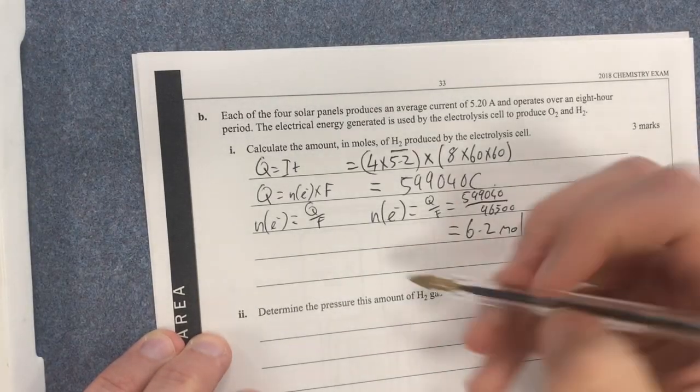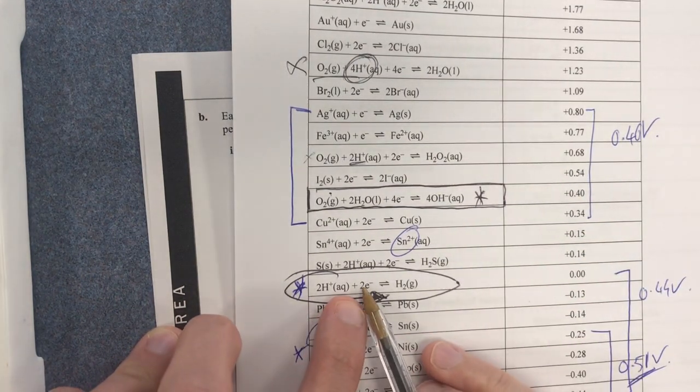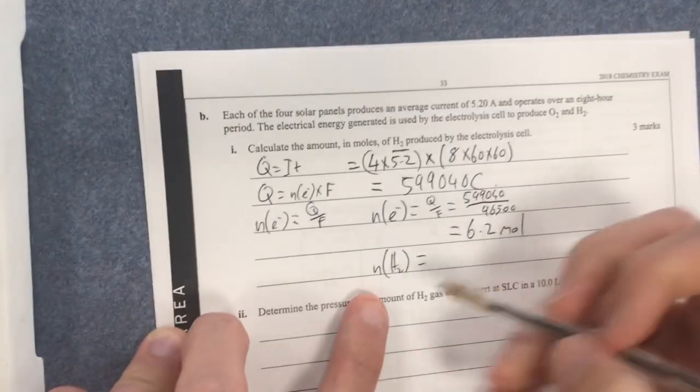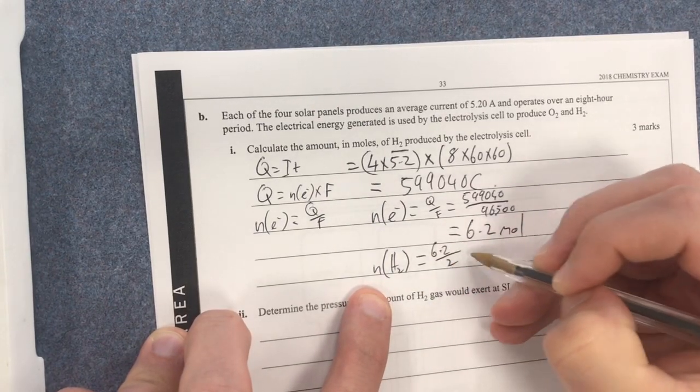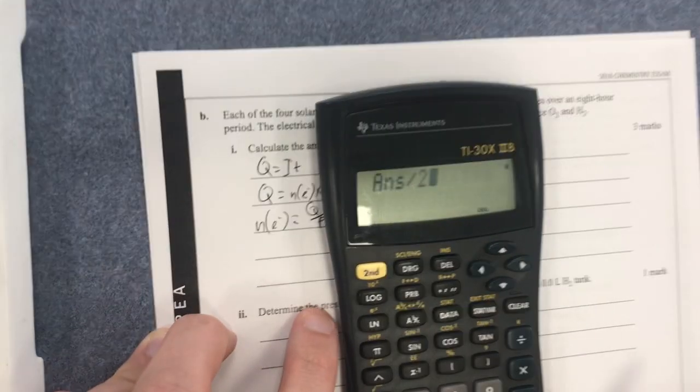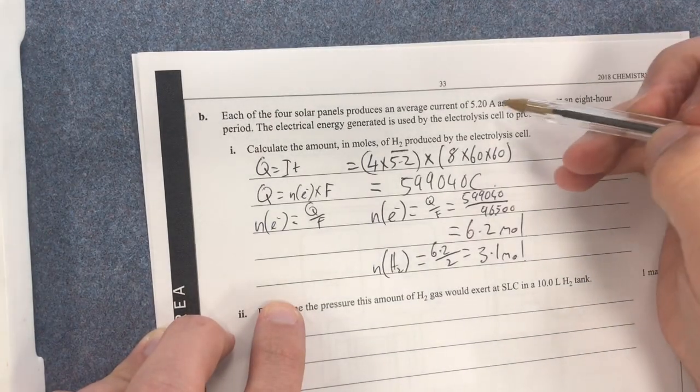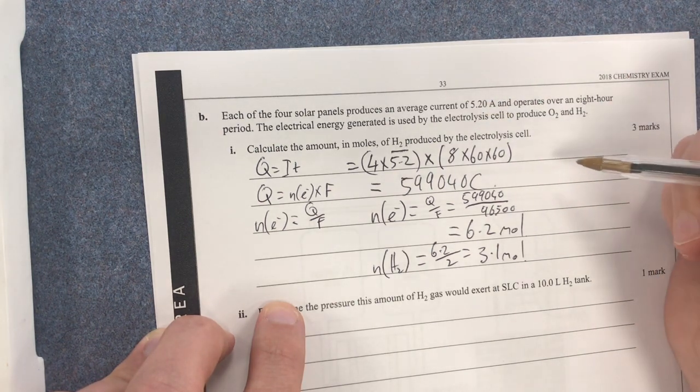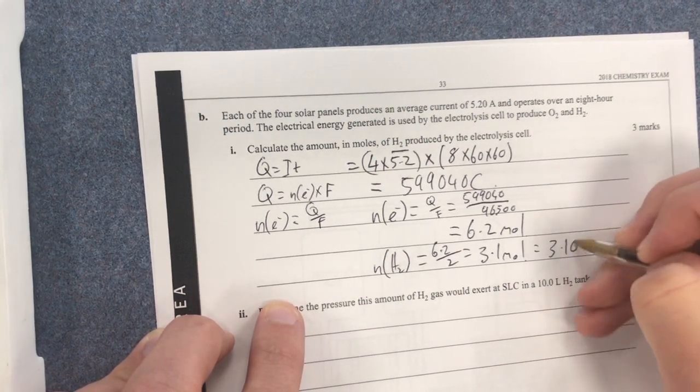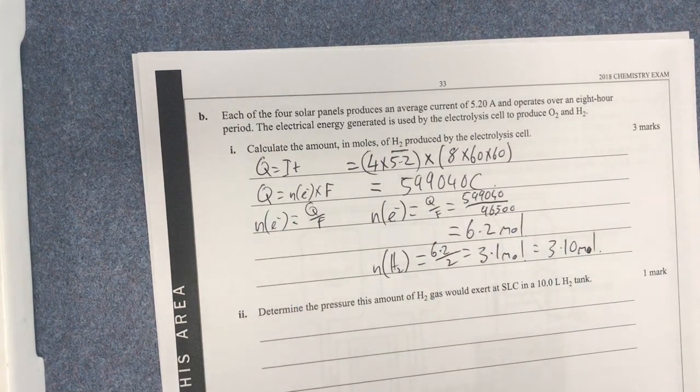Now I then need to work out my number of moles of hydrogen gas. So therefore it's my ratio of electrons to hydrogen gas. My electrons are 2 to 1. So therefore hydrogen gas is going to be half as much as the electrons. So number of moles of hydrogen equals 6.2 divided by 2 equals 3.1 mole. Now I just have to double check that. That's divided by 2 is 3.103. So that's good.